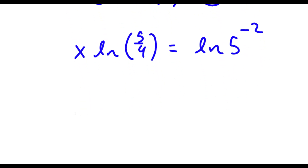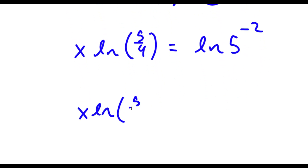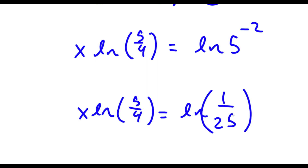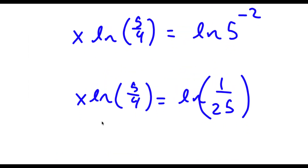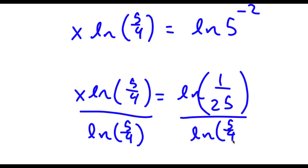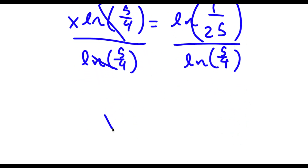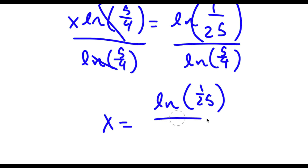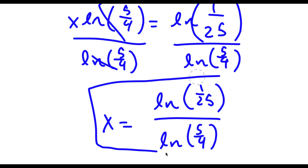Now, 5 to the power of negative 2 is the same thing as 1 over 25. So now this is equal to ln of 1 over 25. Now if I divide both sides by ln of 5 over 4, these cancel out, and I'm left with x is equal to ln(1/25) over ln(5/4). So this is my answer.